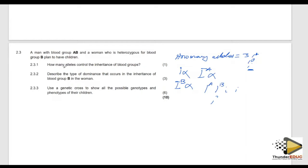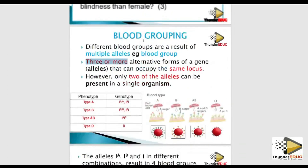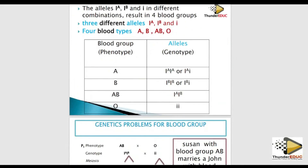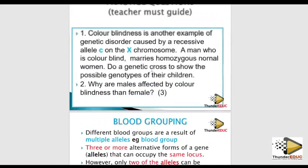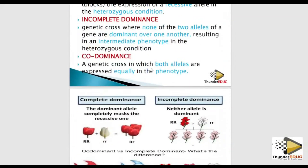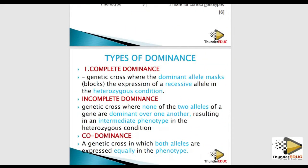Now, describe the type of dominance that occurs in the inheritance of blood group B. There are three types of dominance: complete dominance, codominance, and incomplete dominance. In complete dominance, one allele is completely dominant over the other. In codominance, both A and B alleles are expressed.